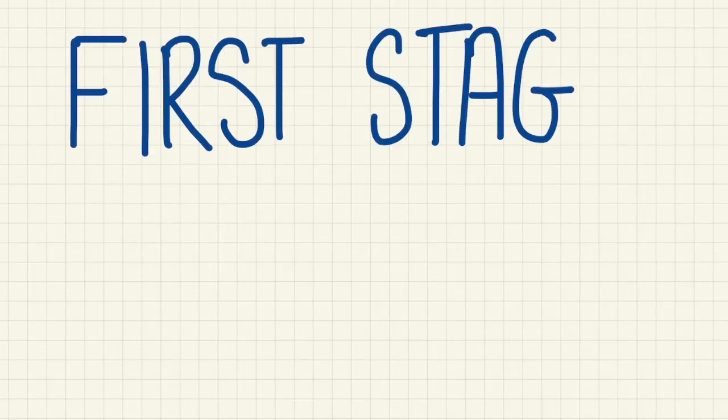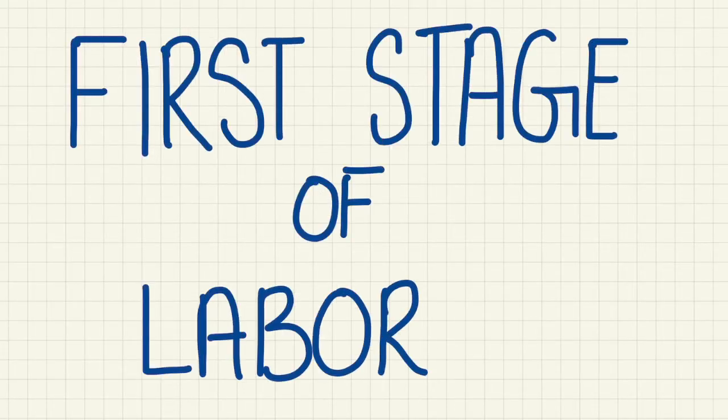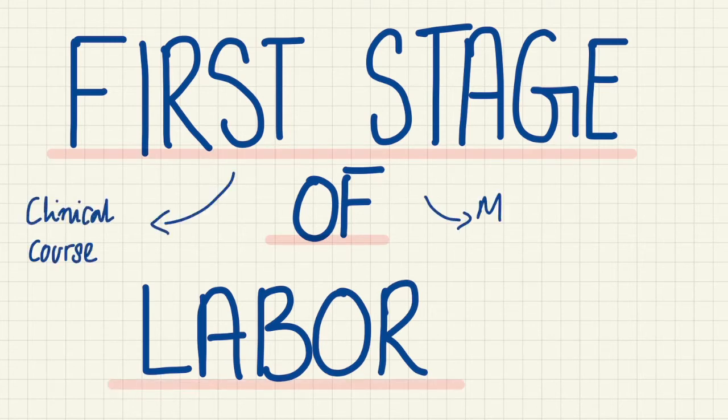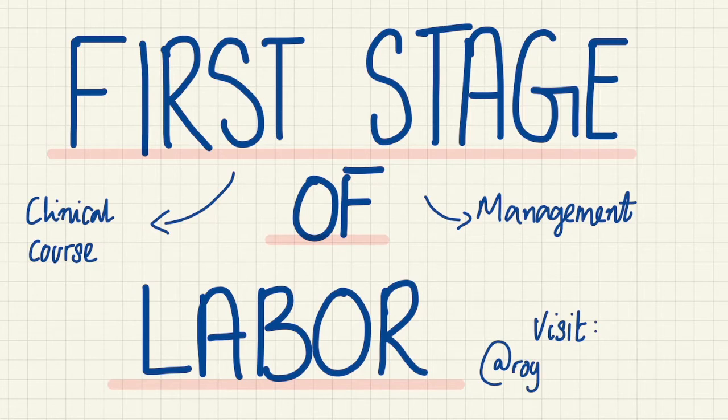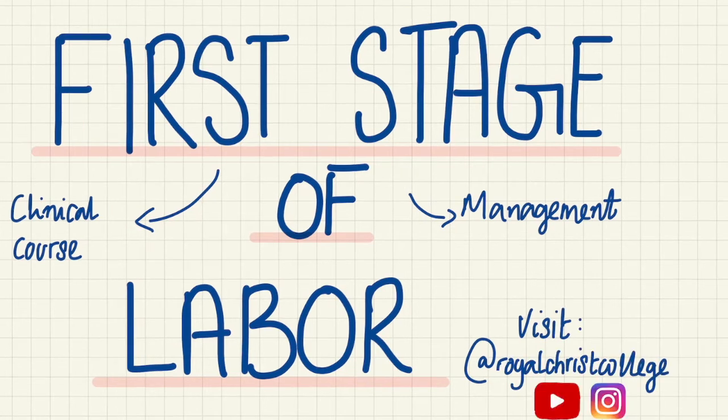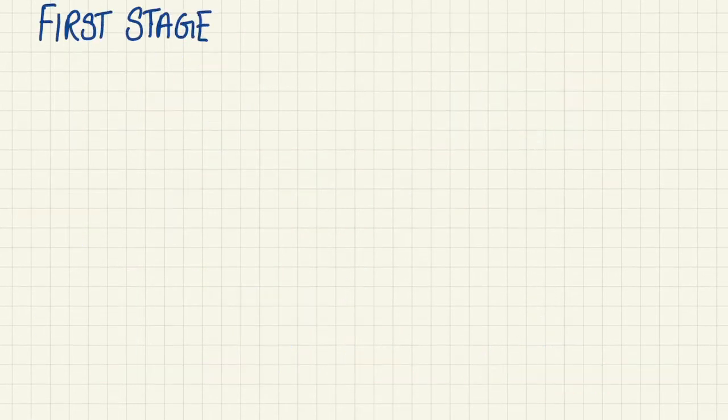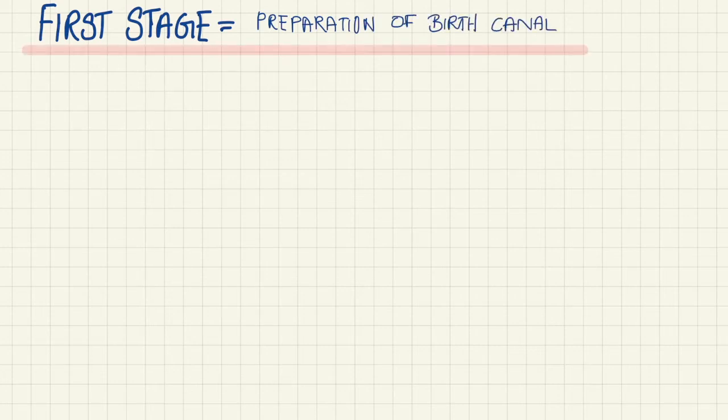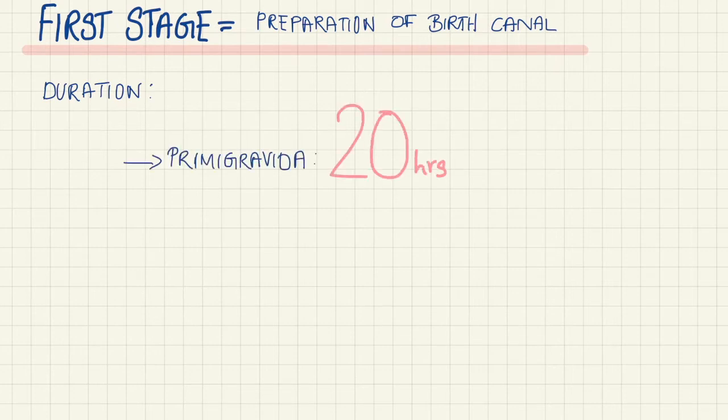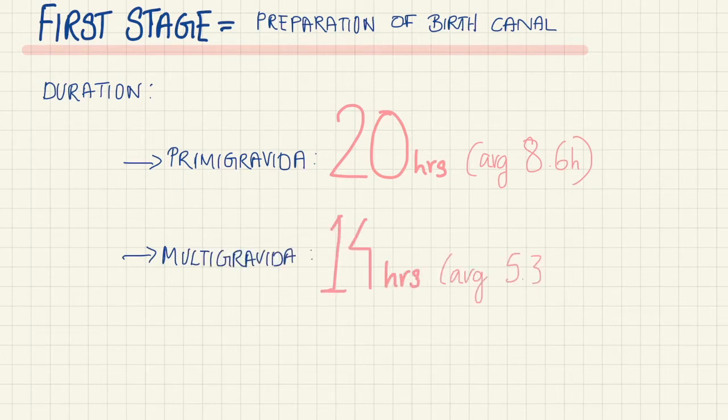Welcome! In this video we're going to be talking about the first stage of labor, especially the clinical management as well as the clinical course. The first stage of labor is usually defined as preparation of the birth canal. The normal duration for a primigravida is around 20 hours with an average of 8.6 hours, and 14 hours for a multipara with an average of 5.3 hours.